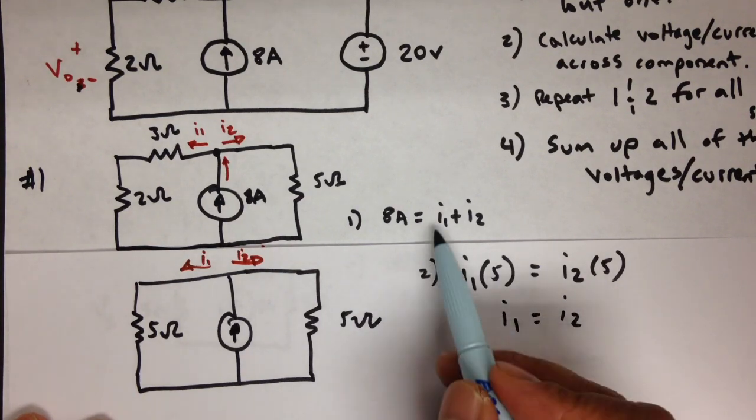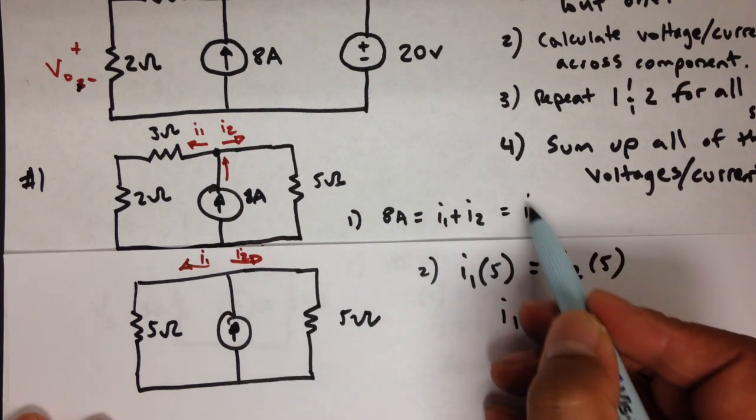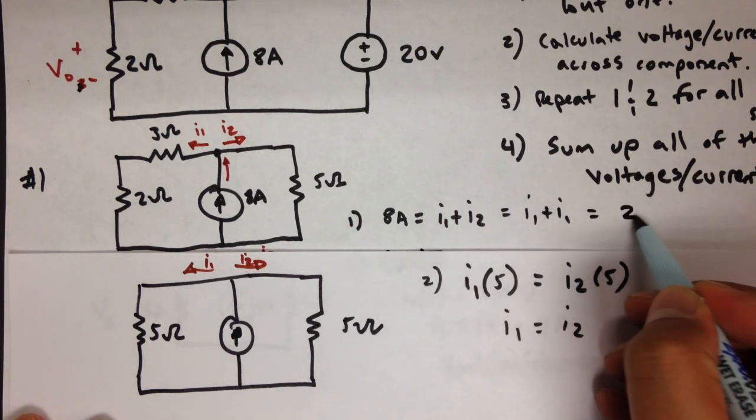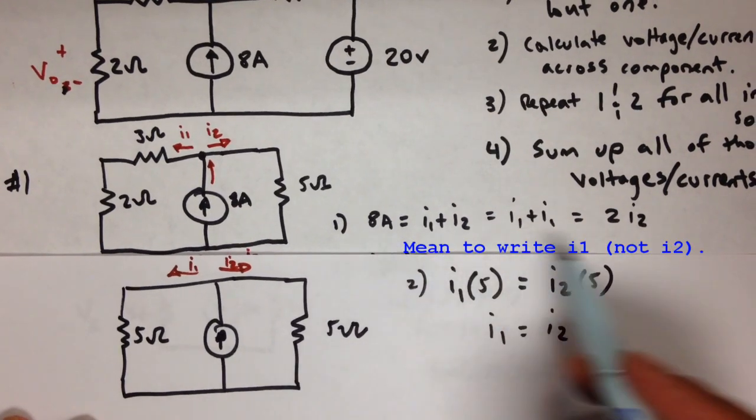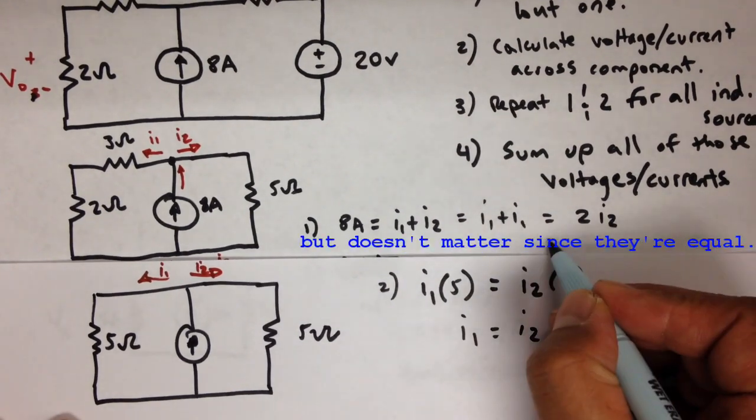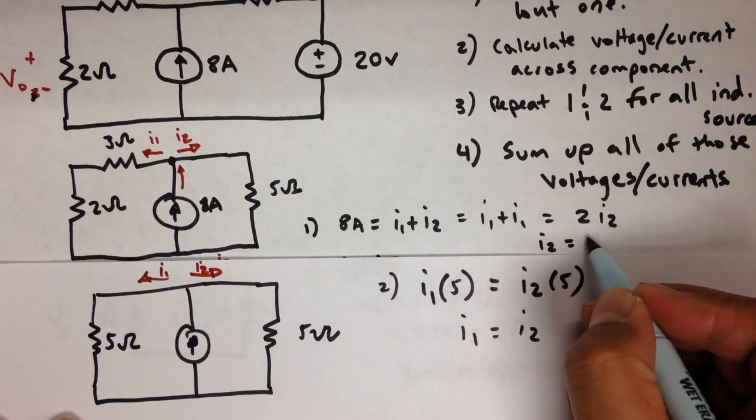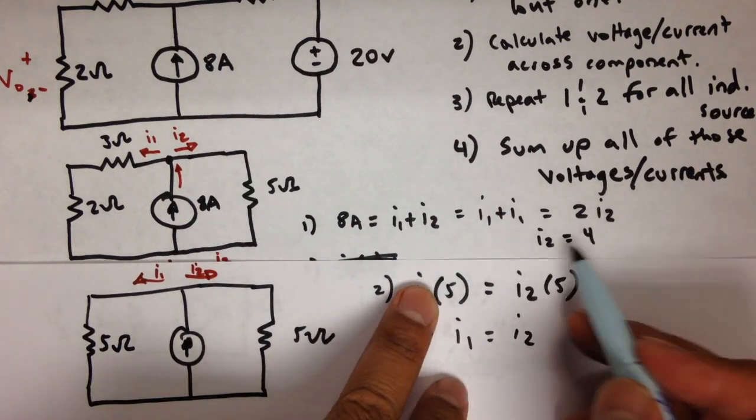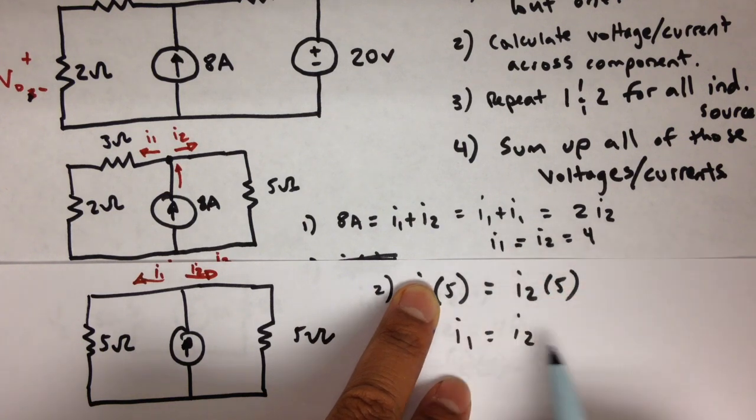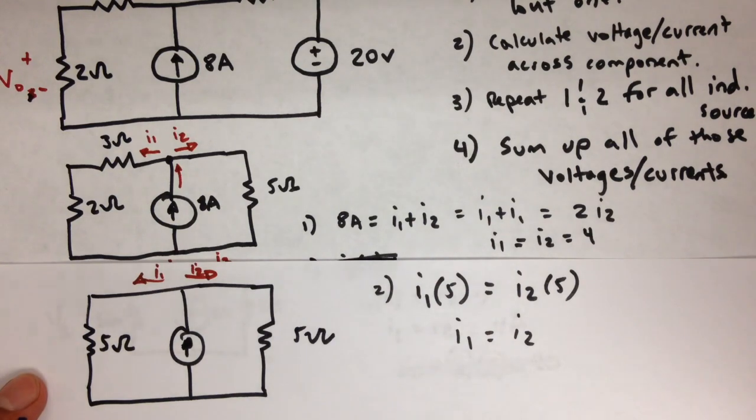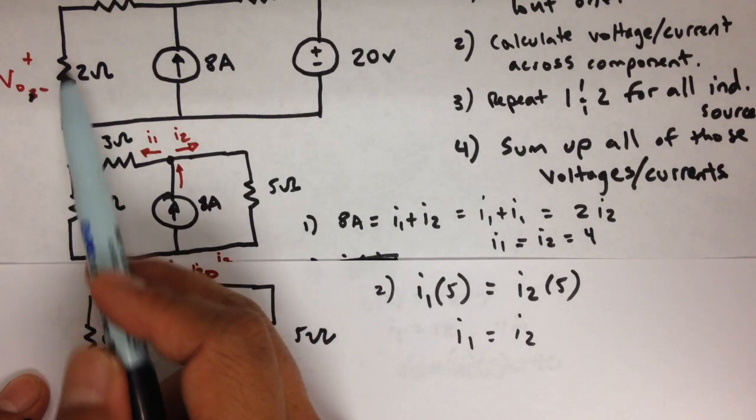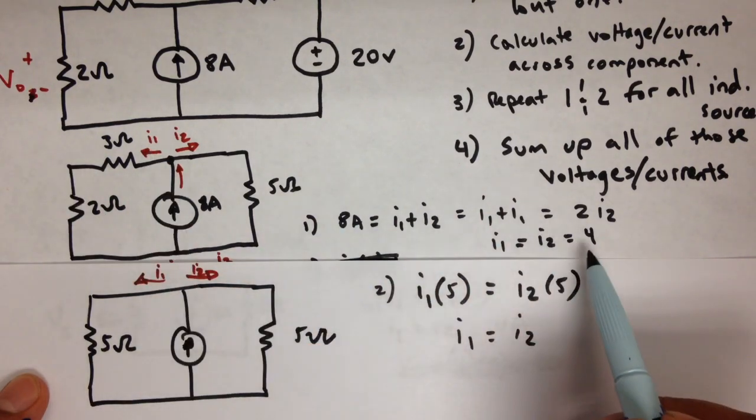So now we have a relationship between I1 and I2. Let's go back to our initial equation. I1 equals I2. So this is the same as I1 plus I1, or I2 plus I2. Okay, so 8 amps equals 2 times I2, which means I2 must equal 4. Okay, I'm pretty sure you saw that a mile away. But anyway, if I2 equals 4, guess what else equals 4? I1 because they are the same. So now we have our current, I1 and I2.